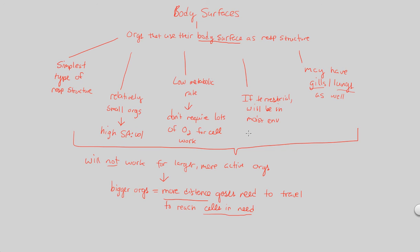That covers our look at body surfaces. Remember, examples of this would be earthworms and amphibians. Next, we're going to continue our look at respiratory structures by focusing on how gills work.